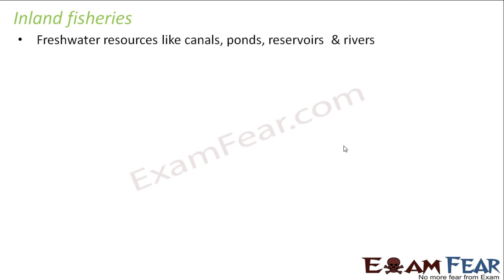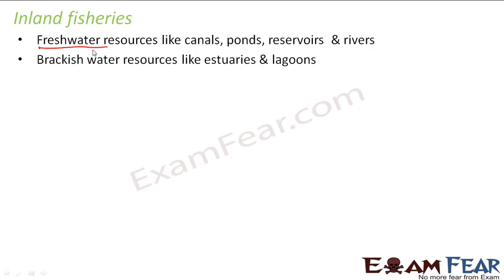Now for inland fisheries, these are freshwater fishes found in water resources like canals, ponds, reservoirs, and rivers. Inland fisheries also includes brackish water resources. Brackish water is a combination of sea water and fresh water, found in places where oceans and rivers meet — known as estuaries and lagoons. So you can find fishes in fresh water as well as in brackish water, and both fall under inland fisheries.